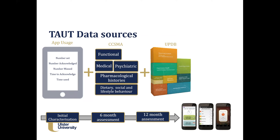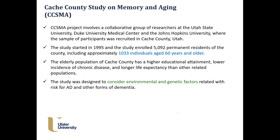We were identifying which features directly or indirectly correlate to adoption. There was a number of data sources from the Taught app — app usage, number of acknowledgements, number of missed reminders, time to acknowledge, and time to use. These patients were recruited from the CCMA dataset from University of Utah, which has patient information including functional and medical data, psychiatric histories, dietary, social, and lifestyle behavior, and medical history data.